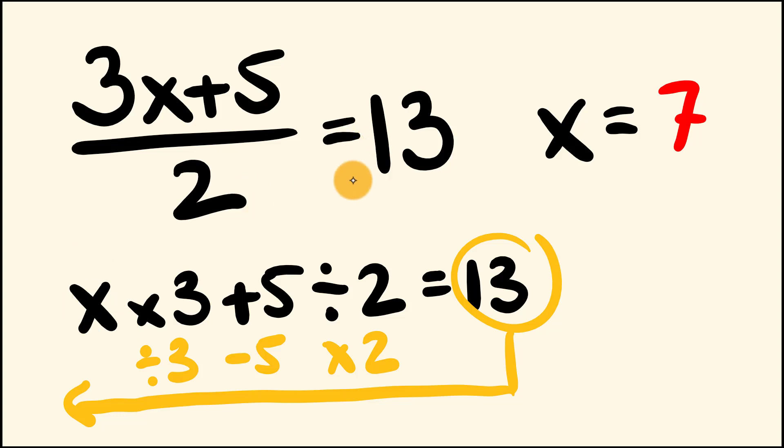Okay, so 13 multiplied by 2 is 26, minus 5 is 21, divided by 3. That gives us our answer: x equals 7. Pretty simple, right? And you can do this really quickly.